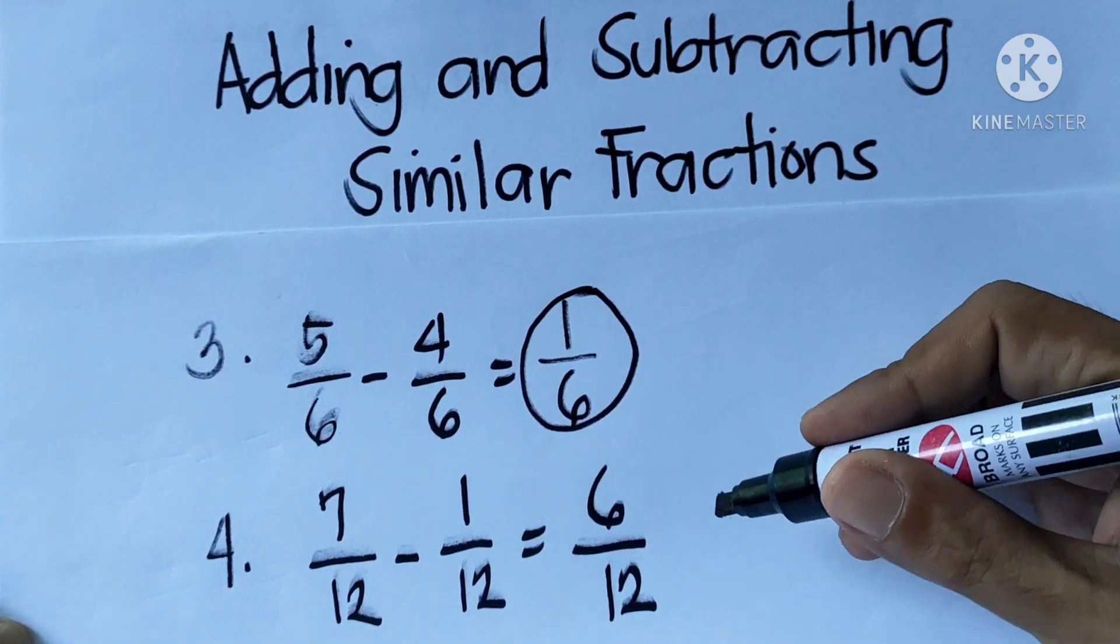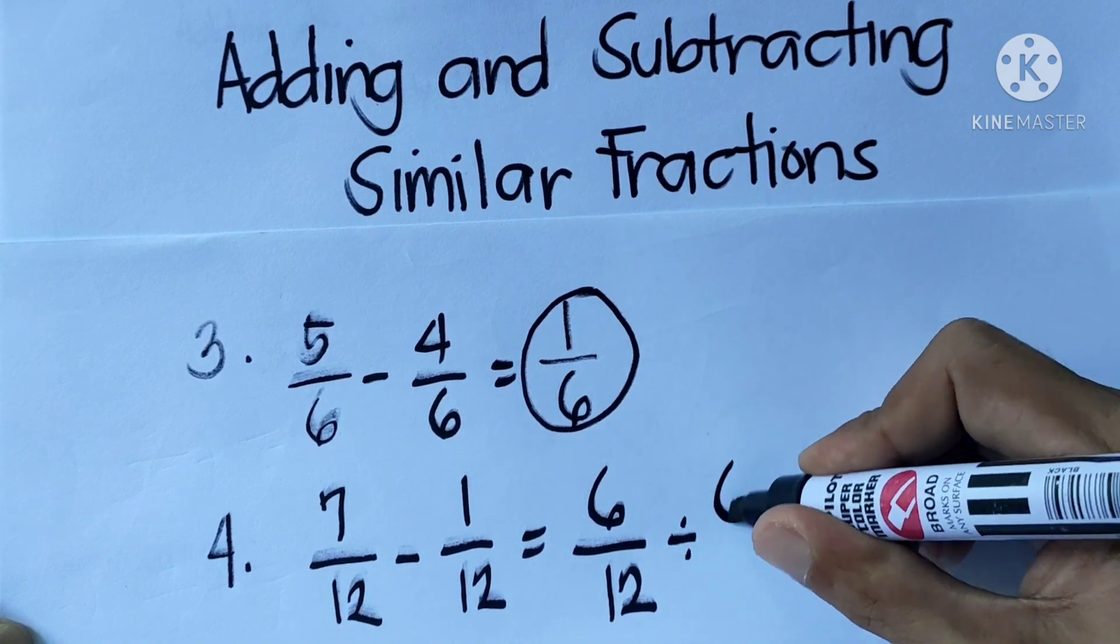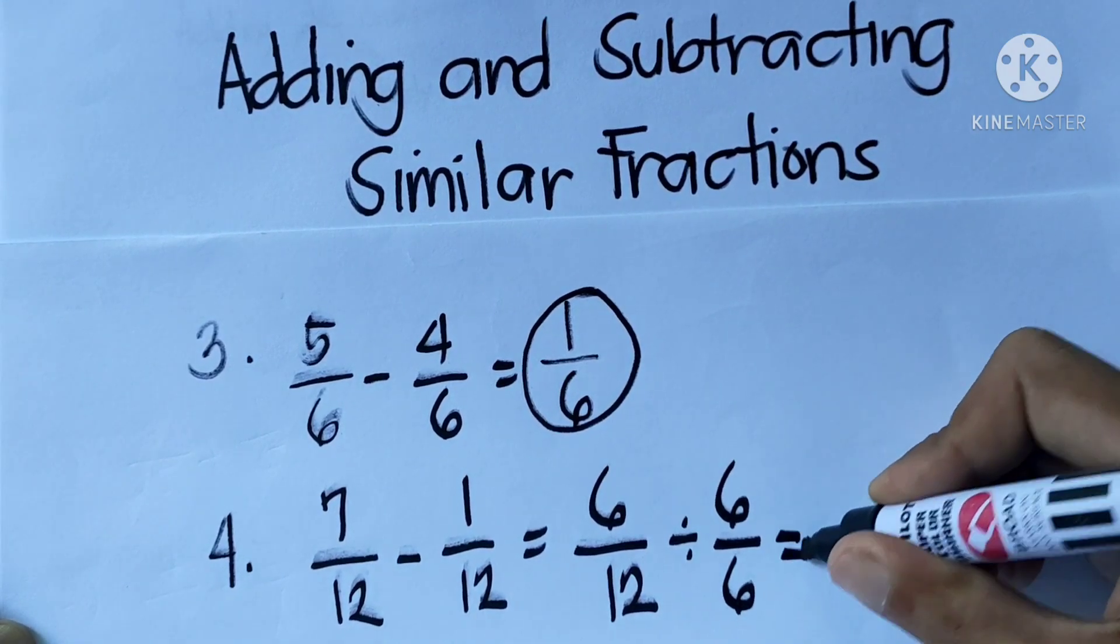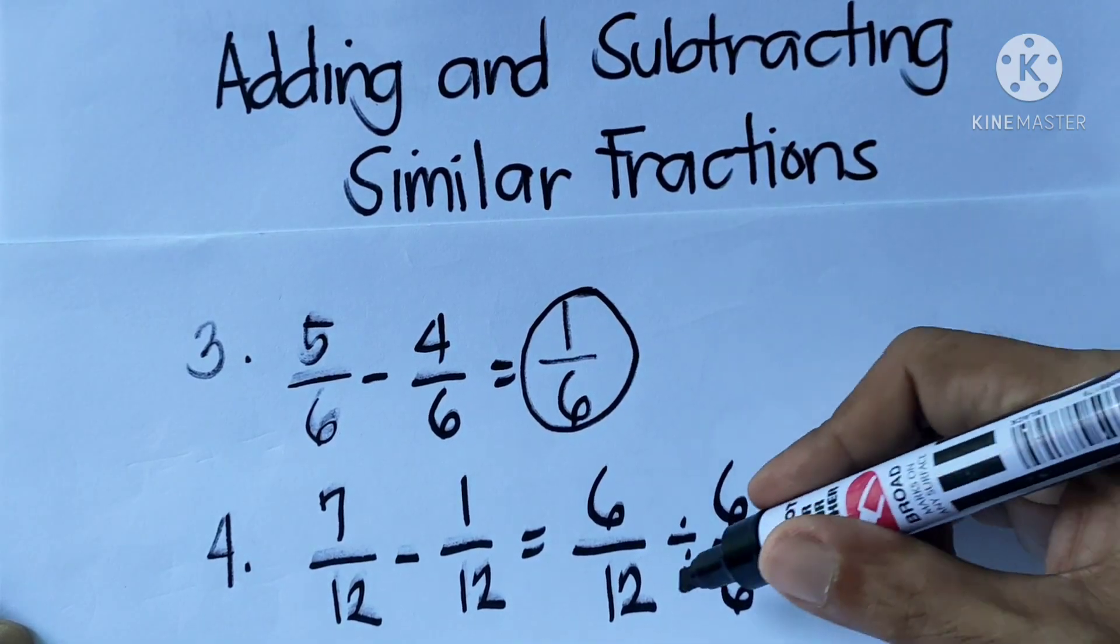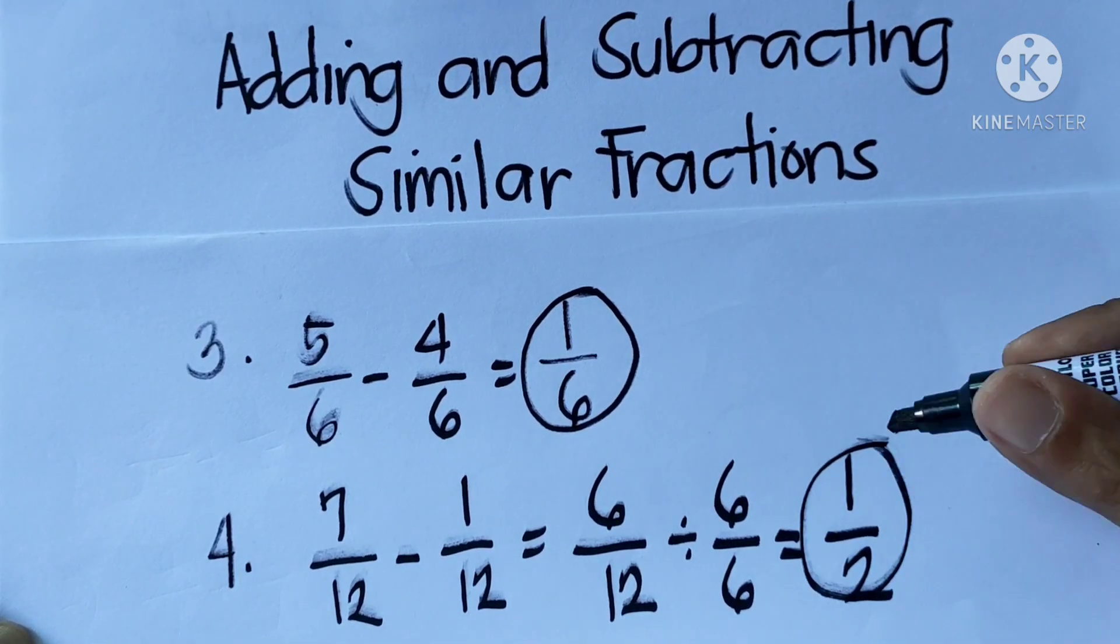But we need to put this in lowest terms. The GCF is 6, so we need to divide by 6. 6 divided by 6 is 1, 12 divided by 6 is 2. So the answer is 1 half.